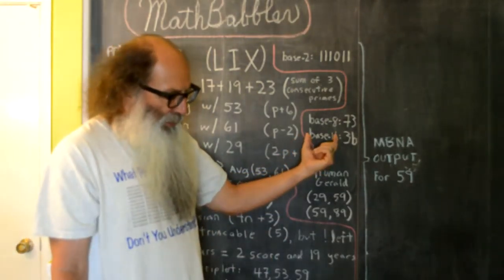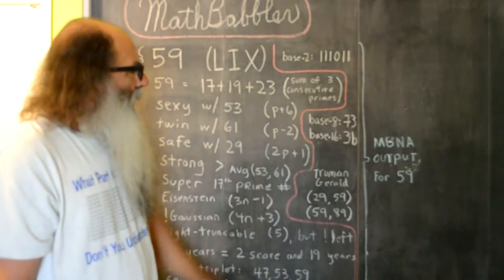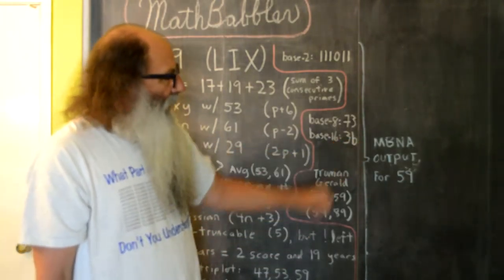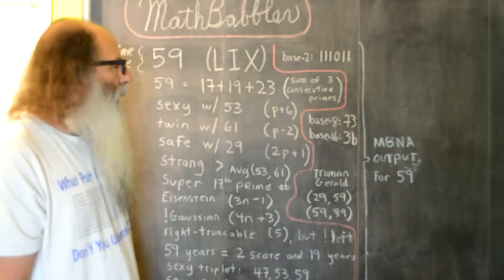And then in hexadecimal, base 16, 59 is 3B, and so 3 is prime, and then B represents the value 11, and 11 is prime.